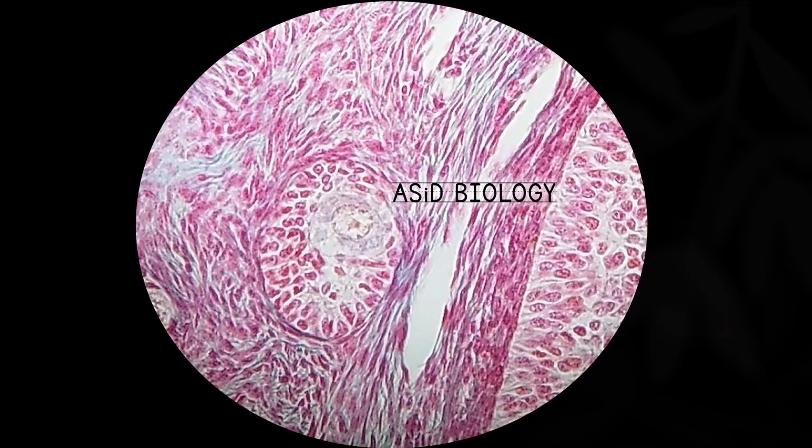The ovary has certain structures that are able to secrete hormones. This is a primary follicle. The primary follicle has follicular tissue, and follicular tissue is able to secrete hormones in the ovary.